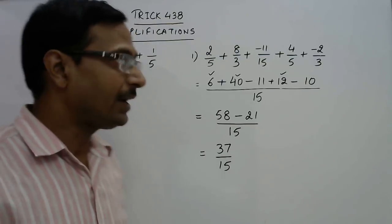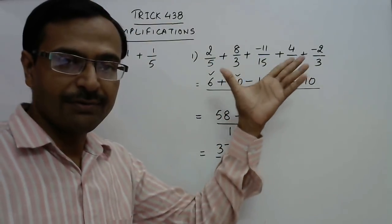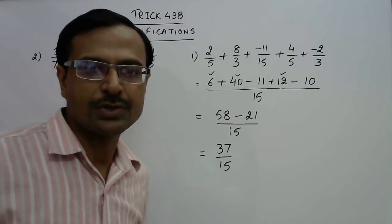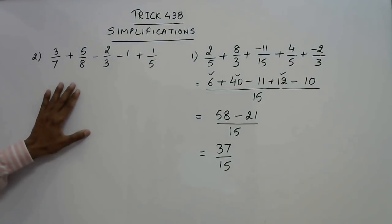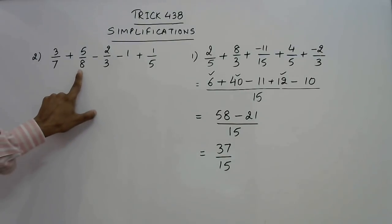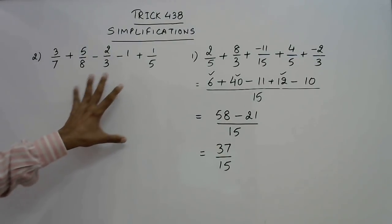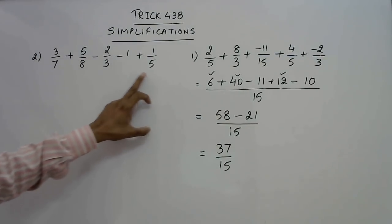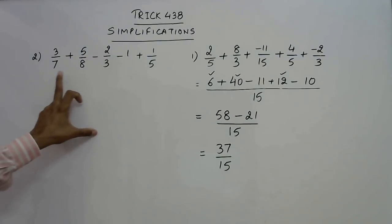Isn't that very simple? It just requires the knowledge of basics of taking LCM. Let us have one more question. Now see in this question we have a different situation where the highest number in the denominator is 8 and all other numbers 7, 3, 5 they are not the factors of 8. In the table of 3 you will not find 8. In the table of 5 also you will not find 8 and in the table of 7 also you will not find 8.